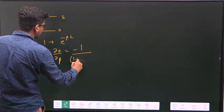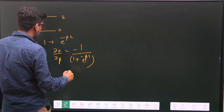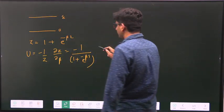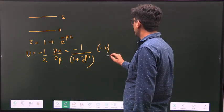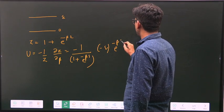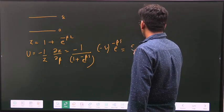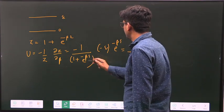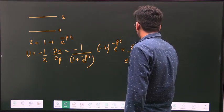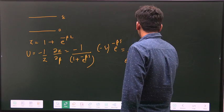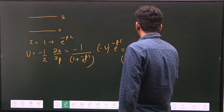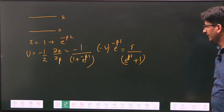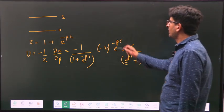into just differentiate it with respect to beta, you will get -E e^(-βE), which is E, and take this in the denominator, it will become e^(βE) + 1. So this is the average energy.